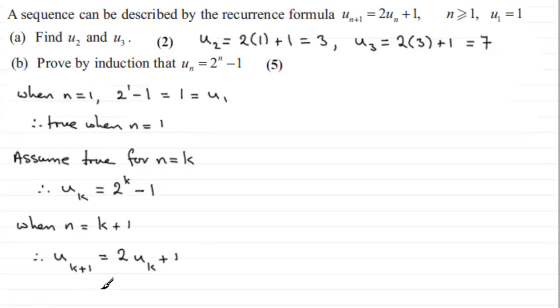And that is going to equal, we'll put this 2 at the front here, outside a square bracket, because now we can take the assumed value for the kth term in the sequence. We're assuming that it's 2 to the power k minus 1. So 2 to the power k minus 1. And then we've got plus 1 on the end here.